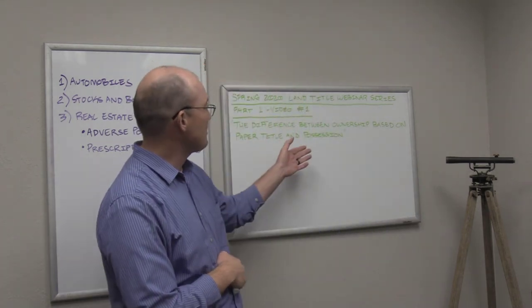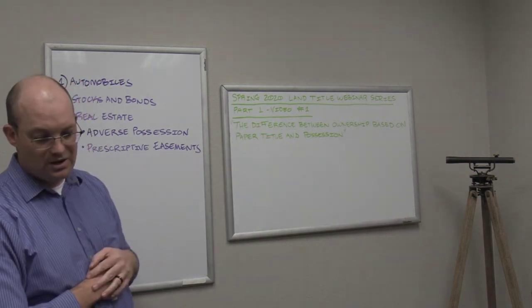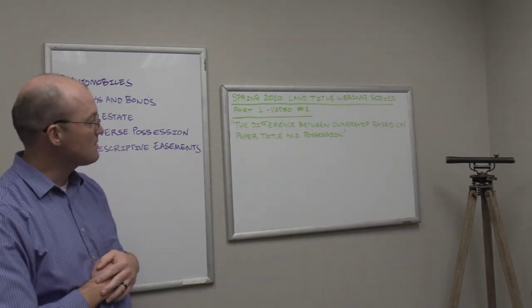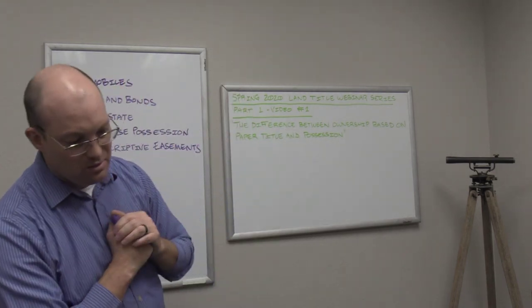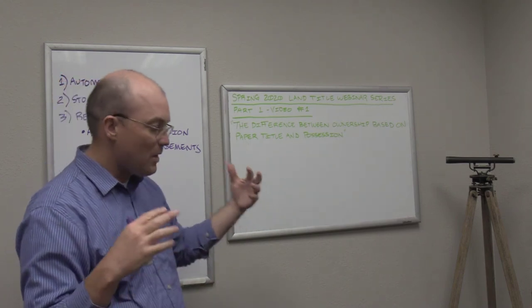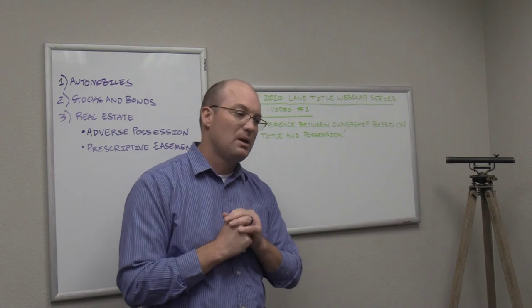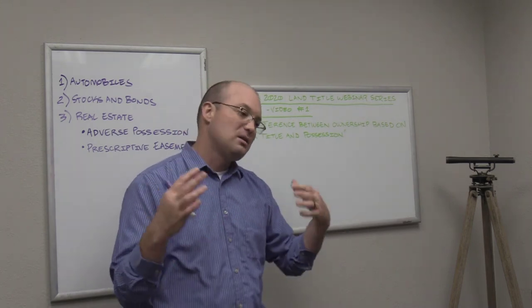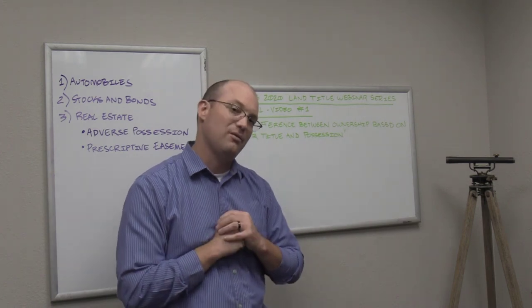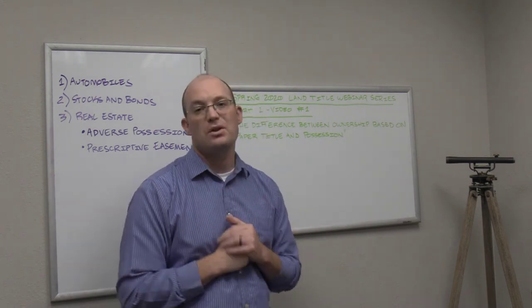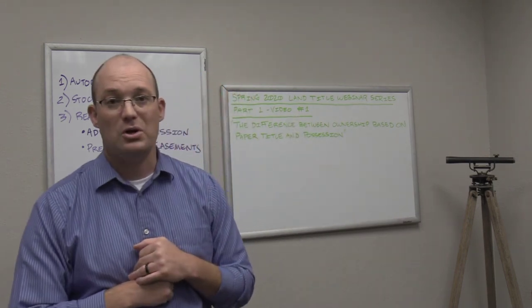So that's the difference between a paper title system and an ownership based on possession. Two very different things. We have a blend in the United States. We're going to talk some more about paper title systems because that's very important here in the United States for real estate. It requires that you have some kind of registration system for your land transfers, a way to track ownership. We're going to talk about how title companies do that, talk about grantor-grantee indexes and title plants and lots of other fun stuff like that. Thanks for watching guys. I appreciate it. Hopefully we'll see you on the third video for part one of our webinar series.